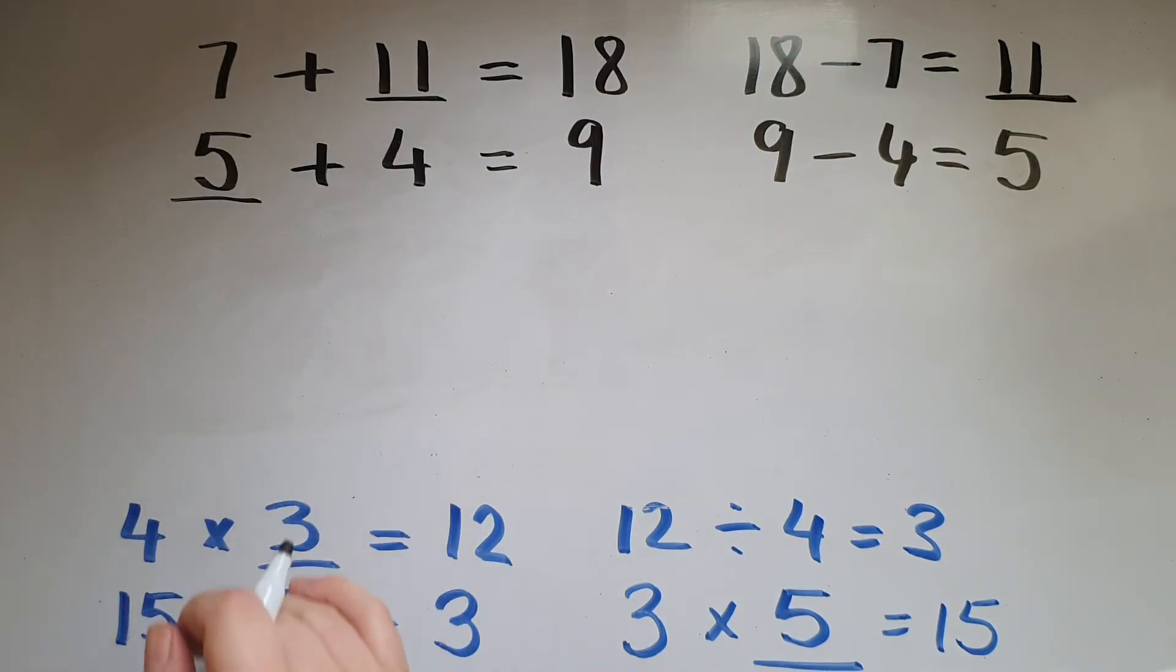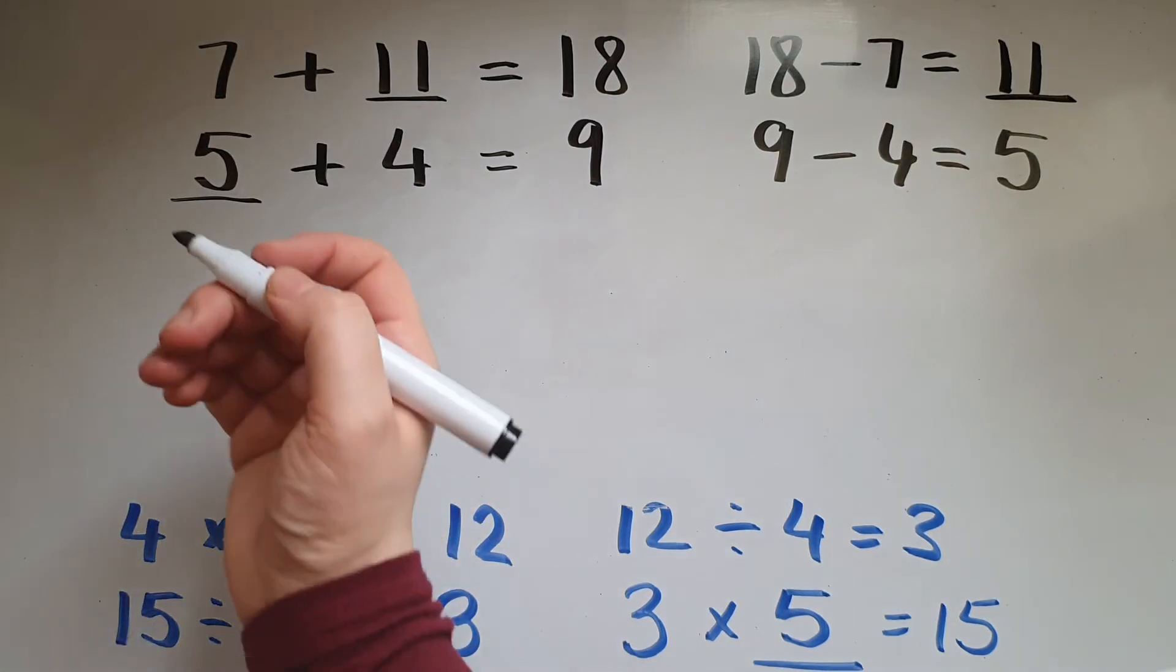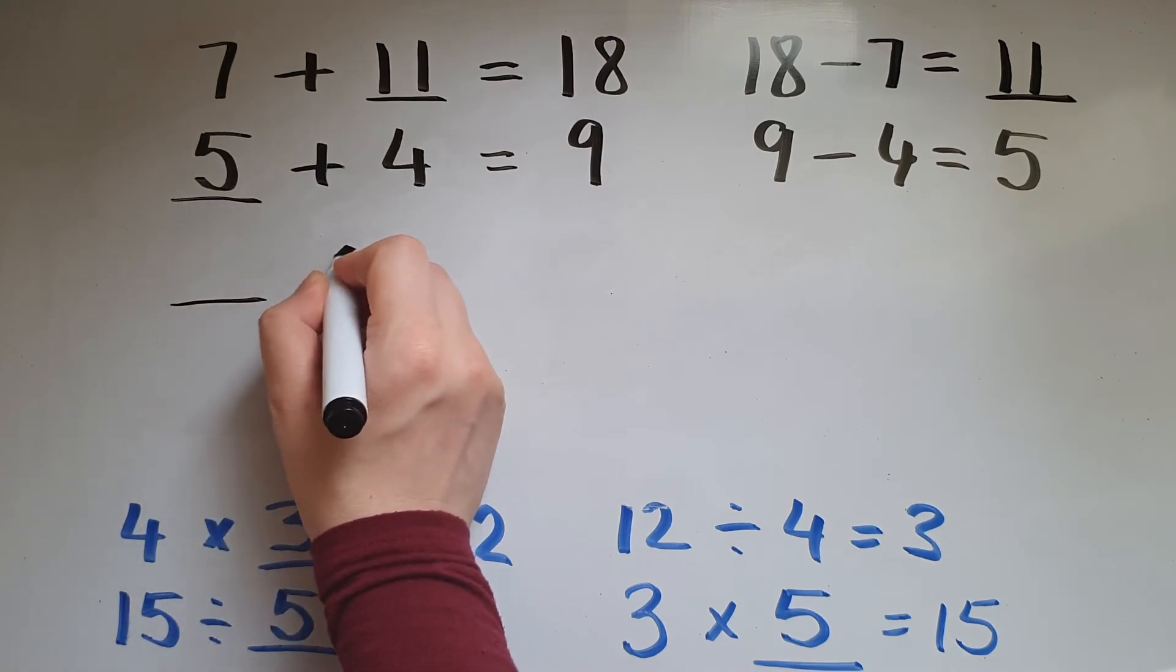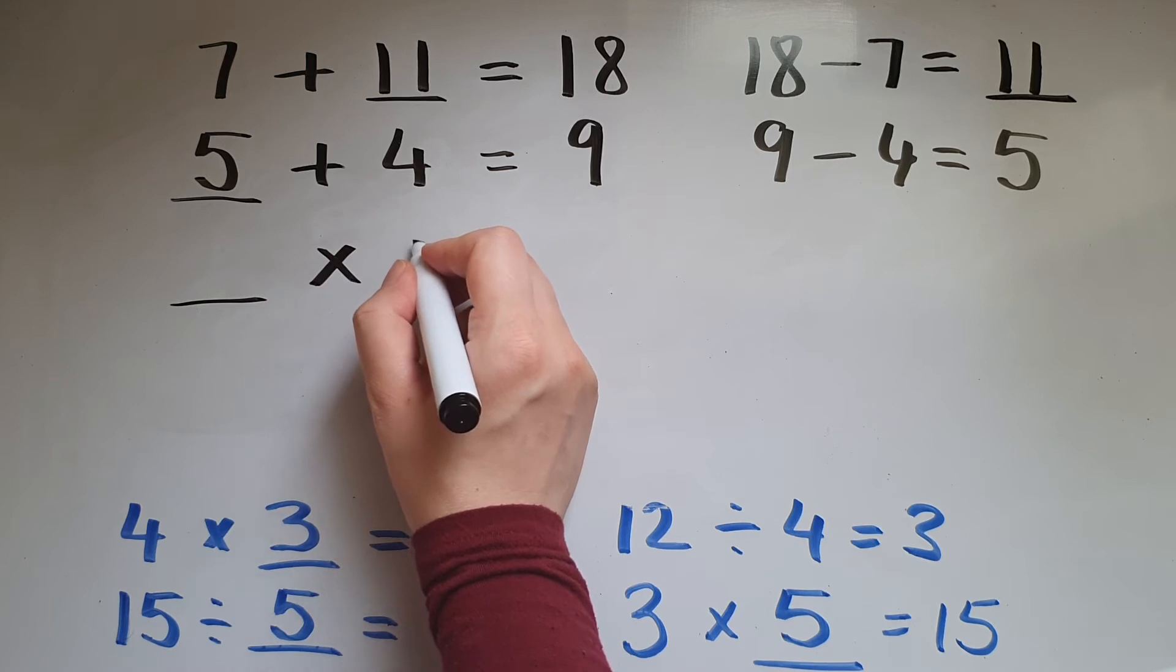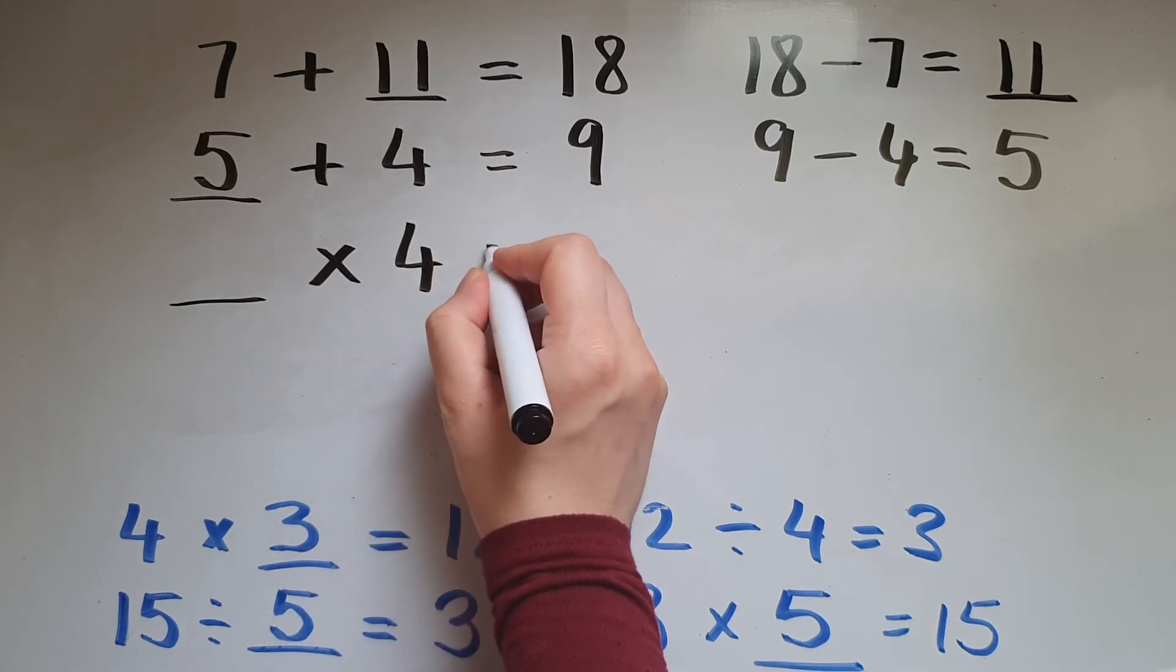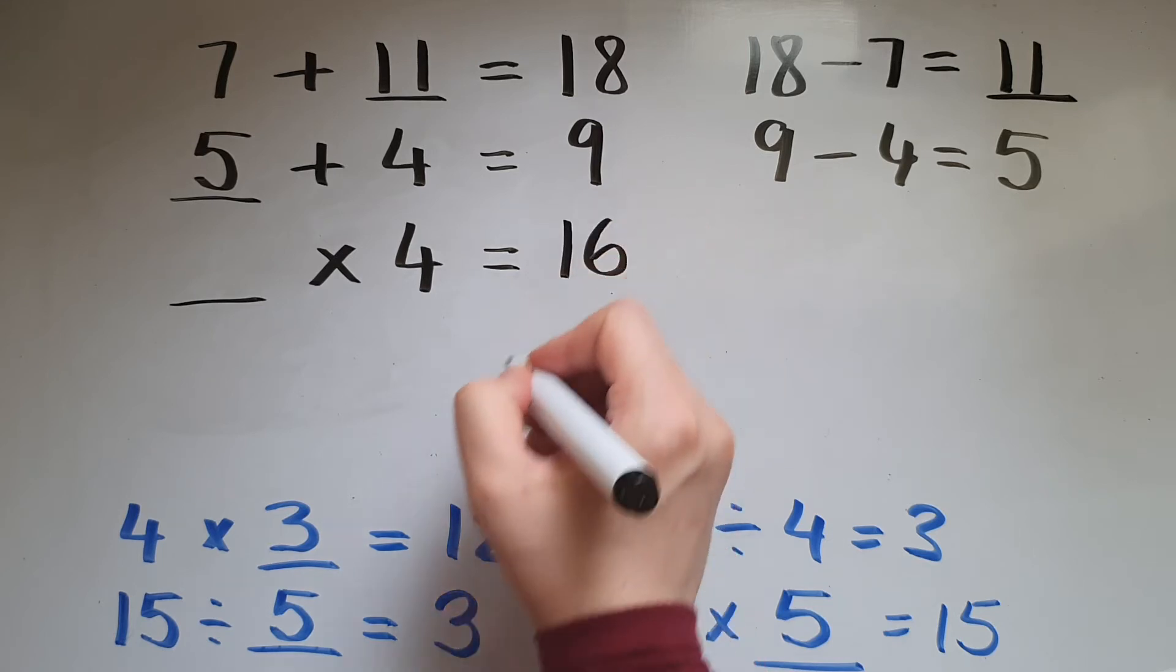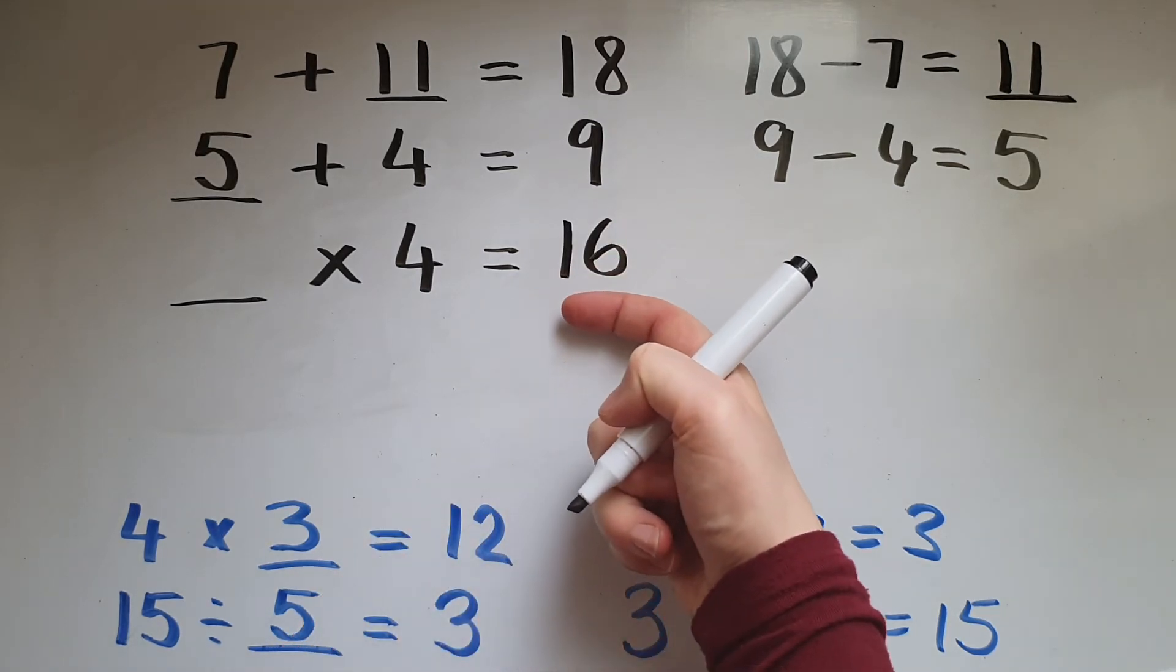Moving on again with a few more examples on multiplication and division. So let's say we've got a number times 4 gives us 16. So going backwards.